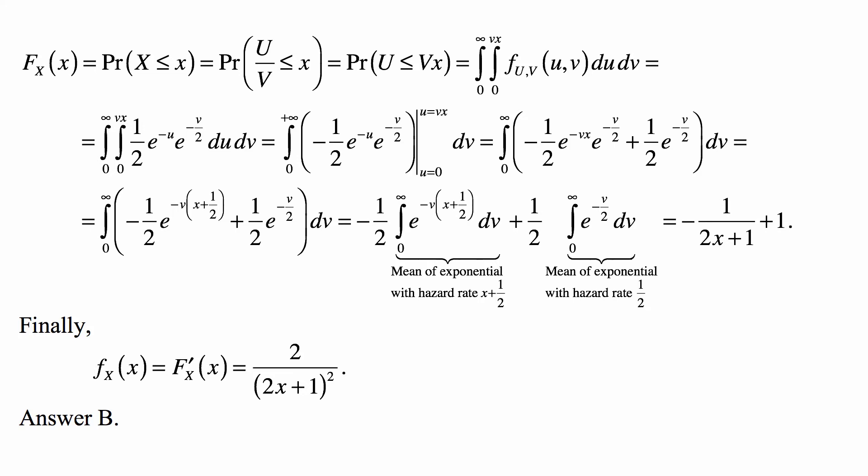The first expression has -1/2 times the mean of exponential with hazard rate x + 1/2, which is 1/(x + 1/2). So -1/2 times 1/(x + 1/2) gives us -1/(2x + 1) + 1, where +1 comes from the second integral.